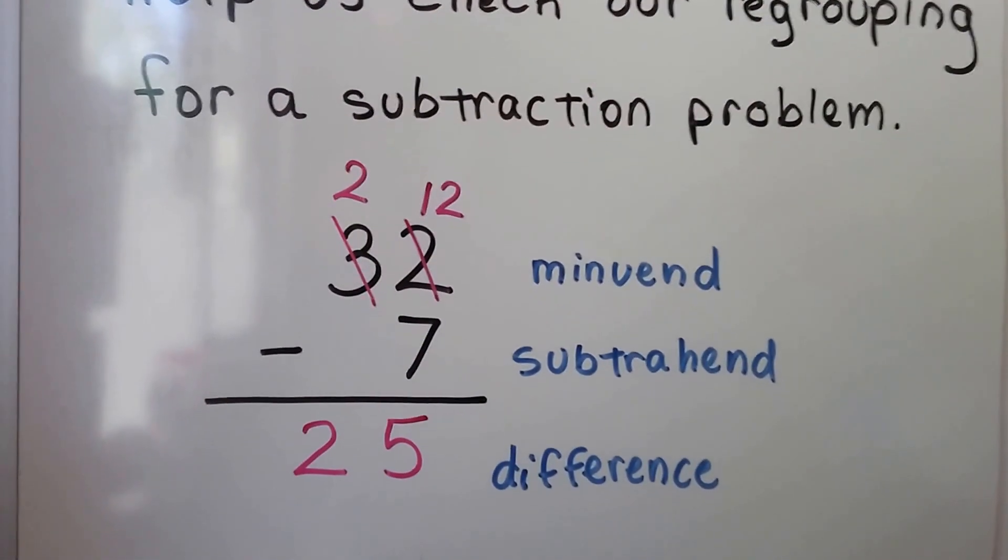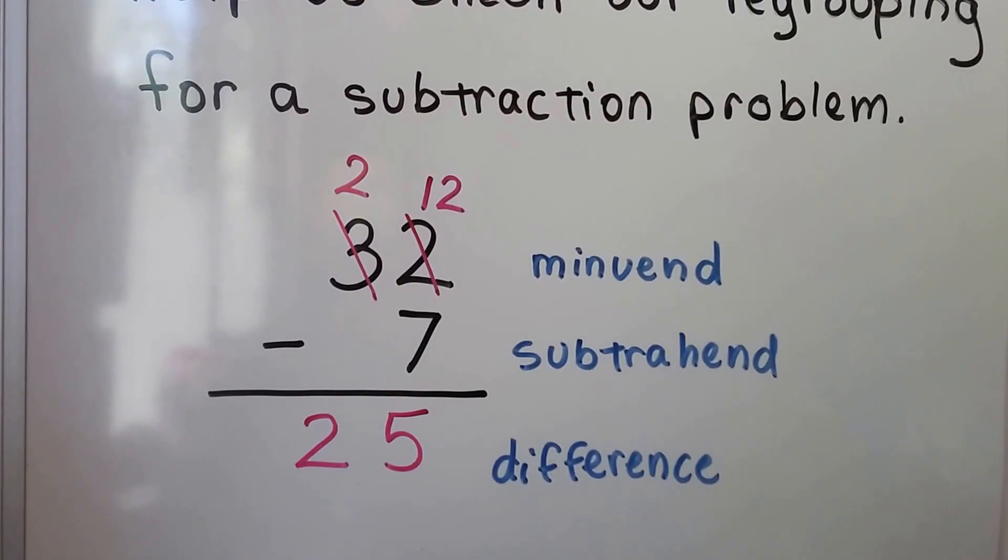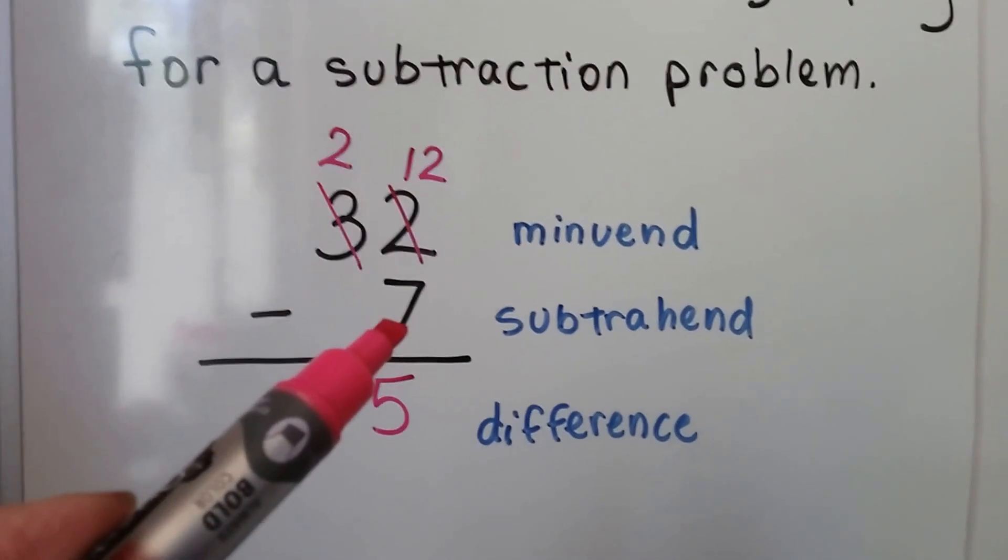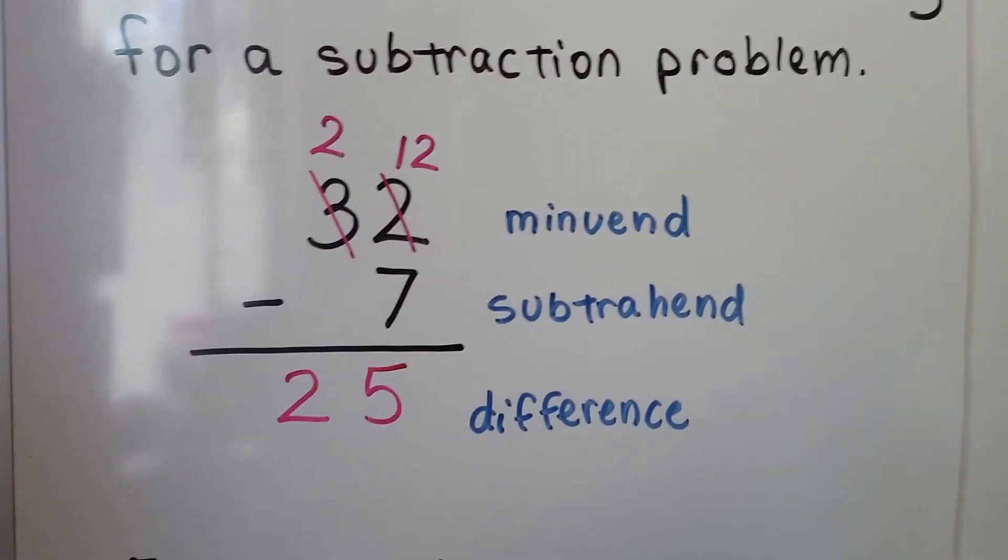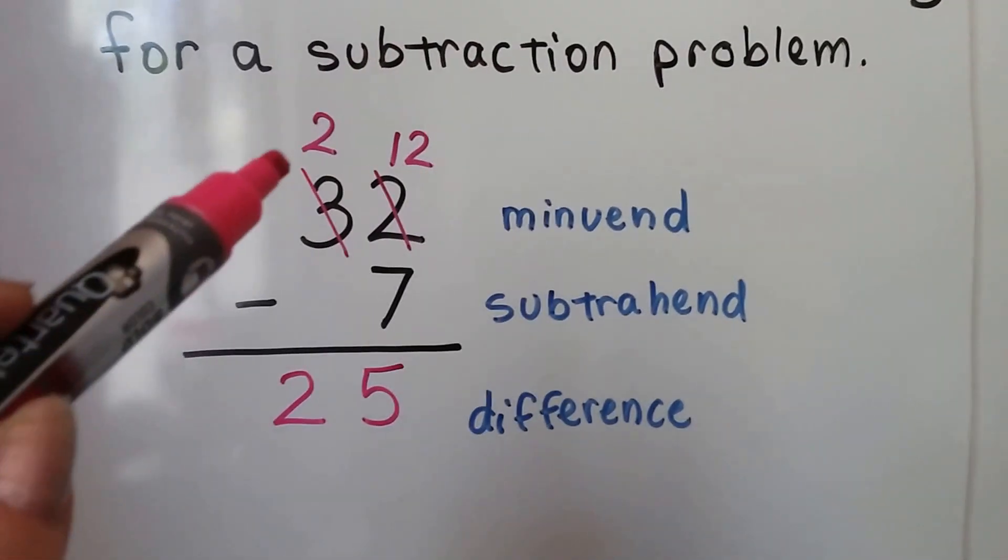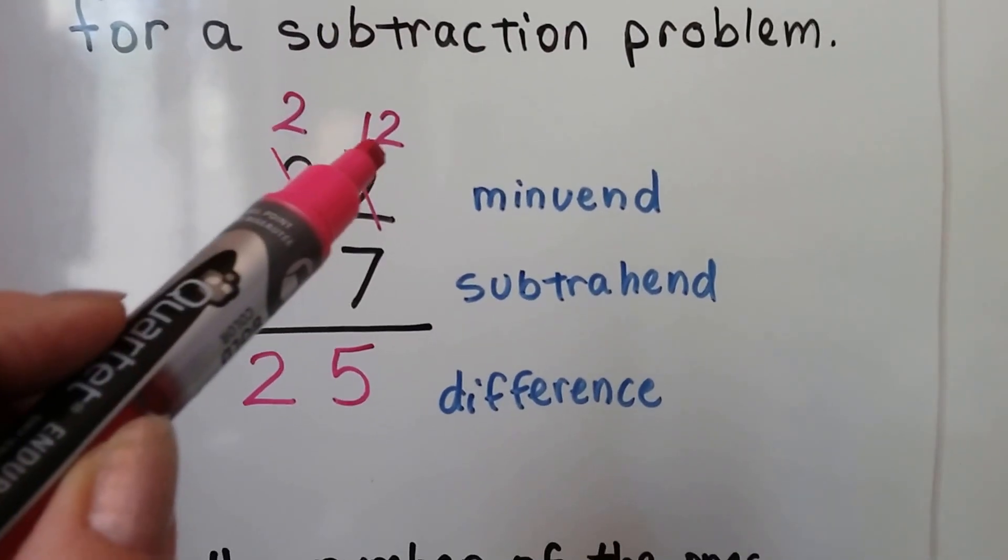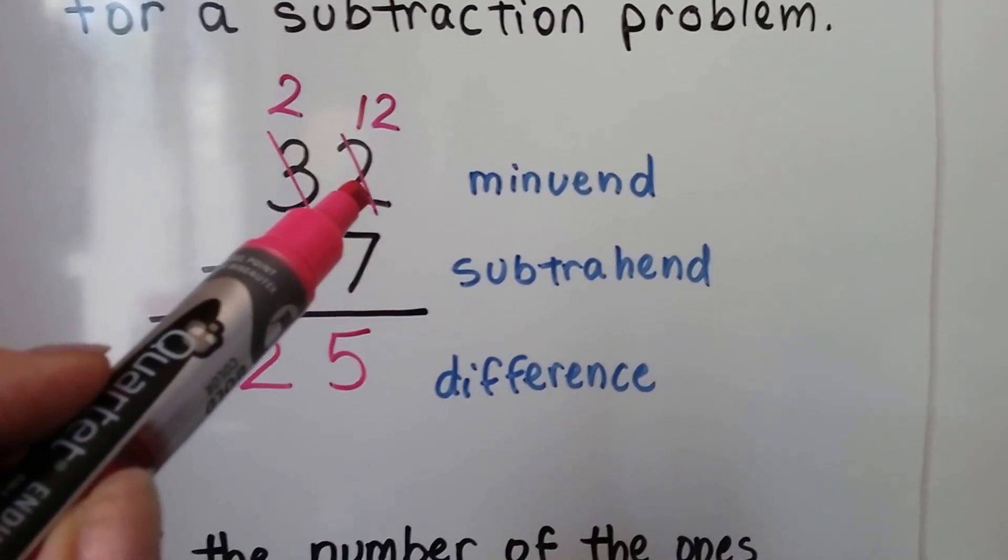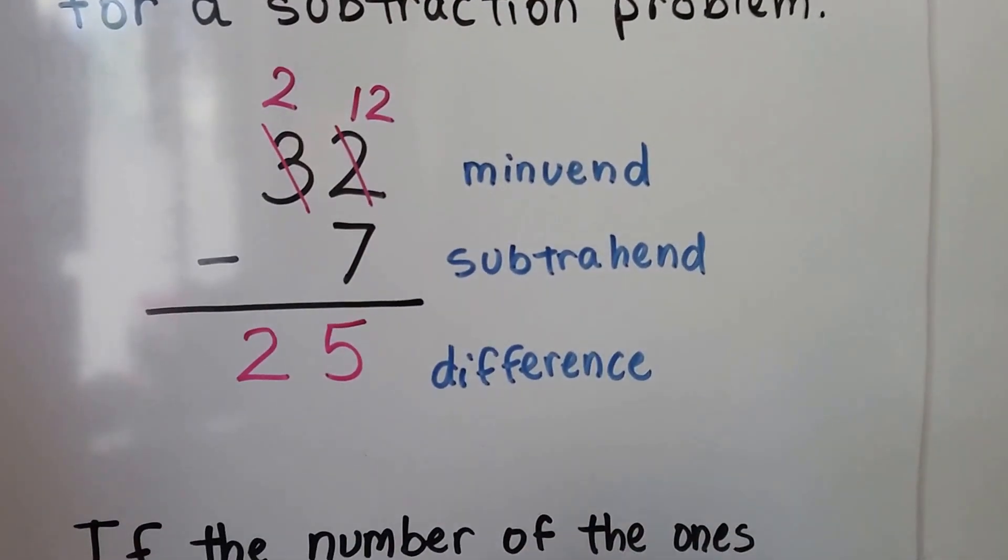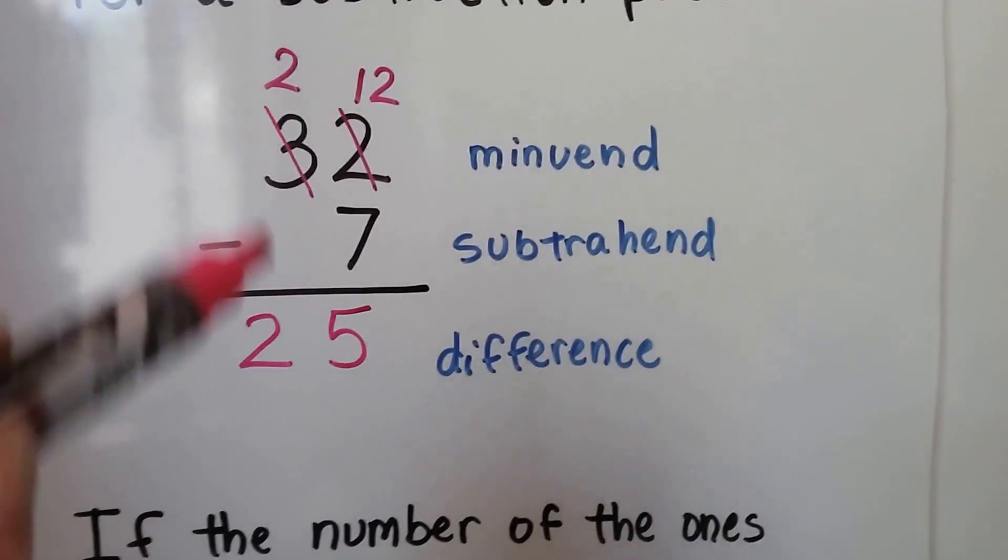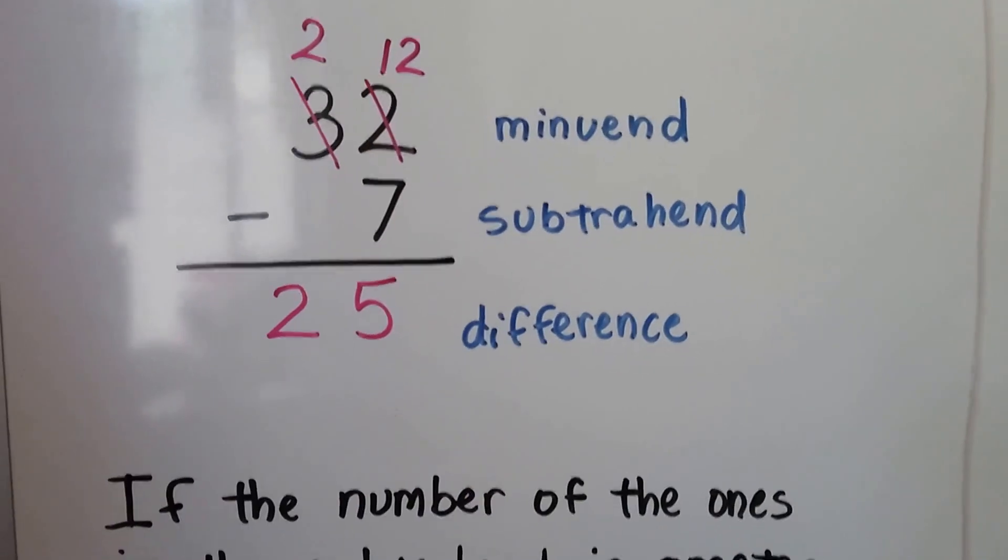We have 32 minus 7. Do we need to regroup? Yes. We can see that this 7 is greater than that 2, so we need to regroup. We cross off the 3 tens and it becomes 2 tens. We give a 10 to the ones place. Instead of 2 ones, we have 12 ones. 12 minus 7 is 5. We drop our 2 down, and our difference is 25.